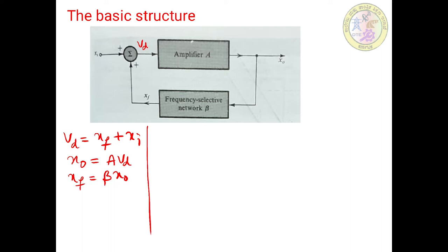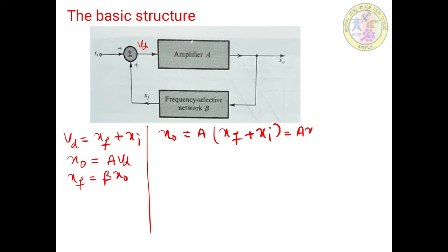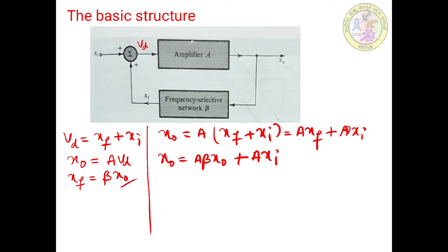Using these three relations, let us derive the transfer function X0 by Xi. Substituting X0 equals A into Vd, and Vd equals Xf plus Xi, we get X0 equals A into Xf plus A into Xi. Substituting for Xf equals beta into X0, we get X0 equals A beta X0 plus A Xi. Grouping the terms, X0 by Xi equals A divided by 1 minus A beta.